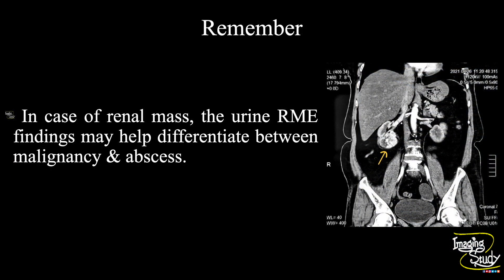Now the take-home message. In case of a renal mass, urine routine microscopy examination findings may help differentiate between malignancy and abscess in confusing cases. In case of malignancy you will get hematuria, whereas in abscess you will get pyuria.